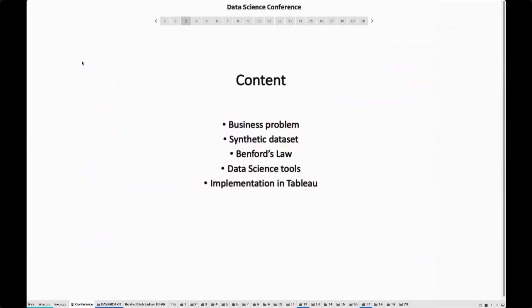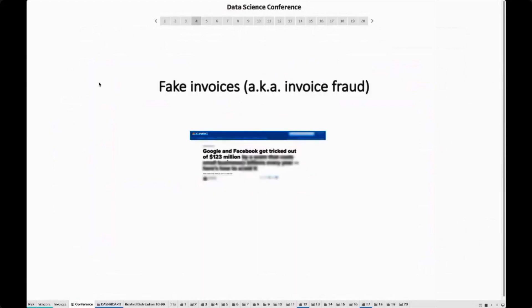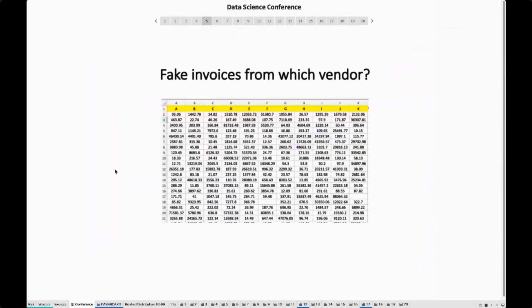Fake invoices are a nasty business problem. According to the FBI, every year companies lose billions to fake invoices. For example, it was reported in 2019 that Facebook alone lost around $100 million in fake invoices. So based on what happened to Facebook, we created a synthetic dataset.